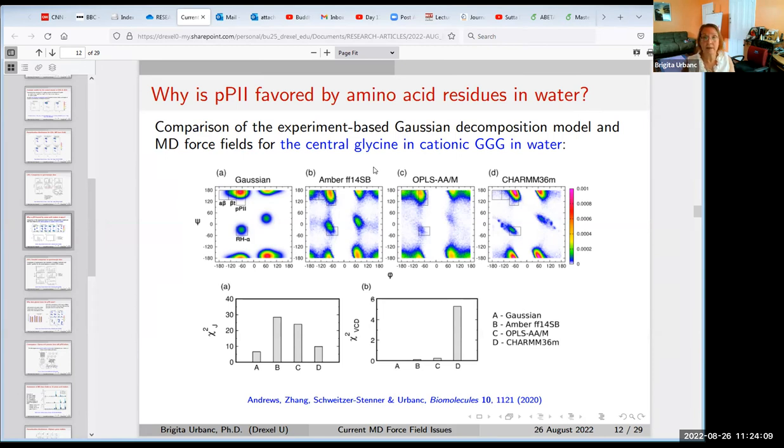We asked ourselves, is that an effect of side chain? Like is alanine a special side chain that causes the formation of this PP2, or does it have to do with the backbone? Because all the amino acids share the backbone. So we said, okay, let's examine cationic GGG. That's an achiral peptide because glycine is an achiral amino acid. Let's find out what are glycine's propensities, glycine's Ramachandran distribution.